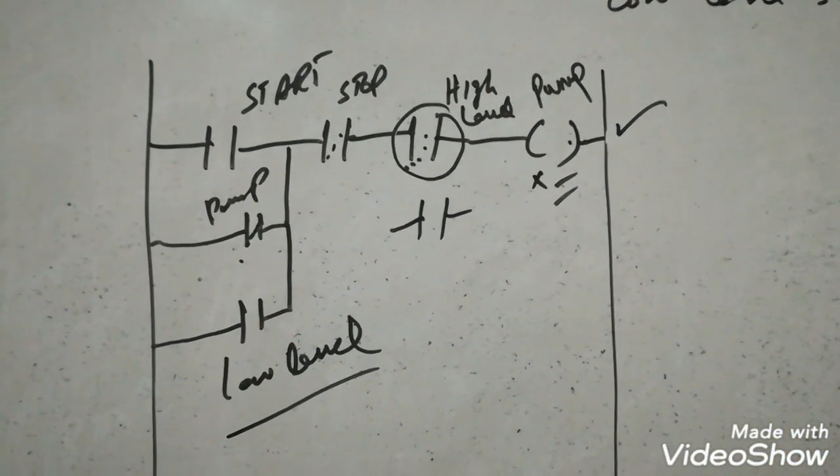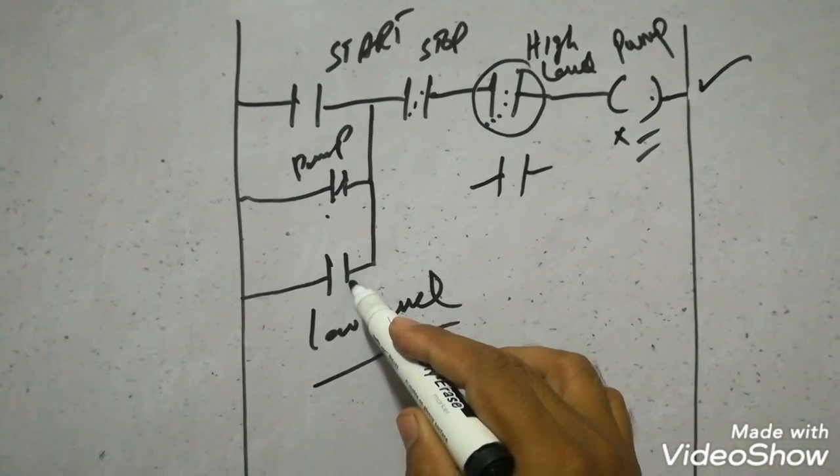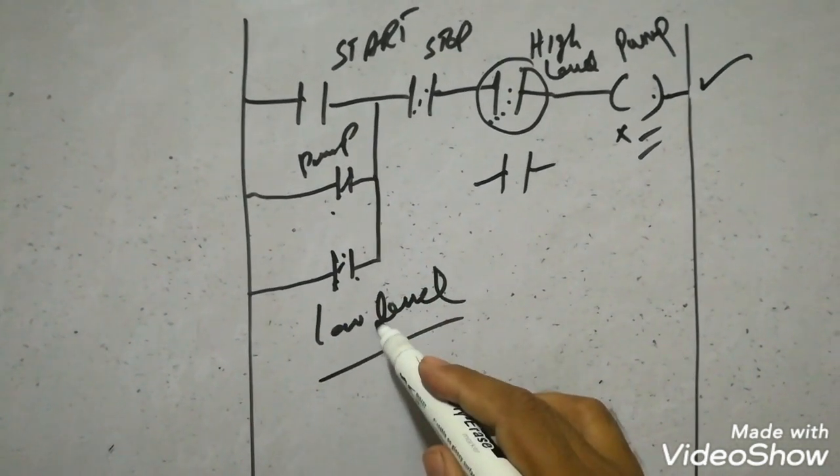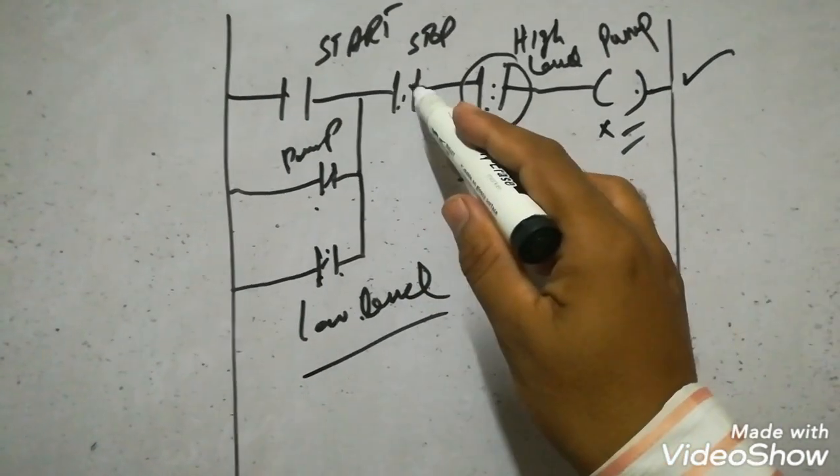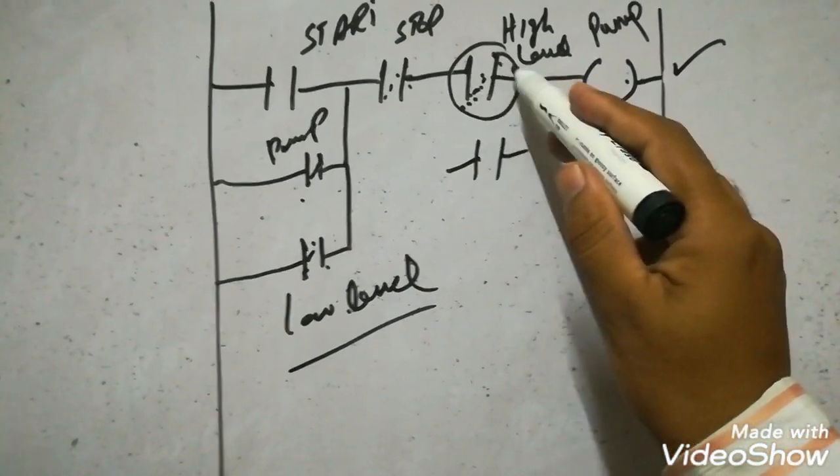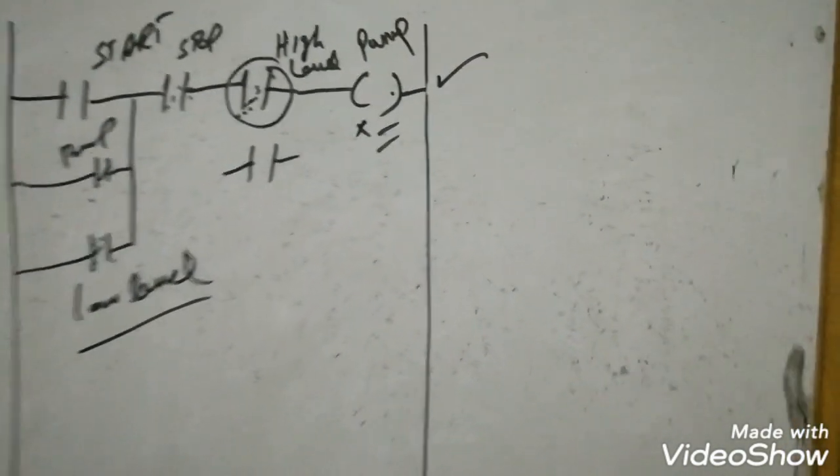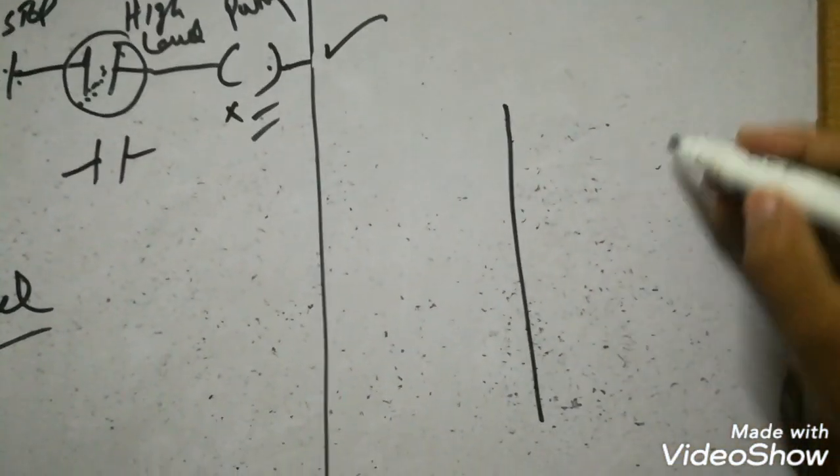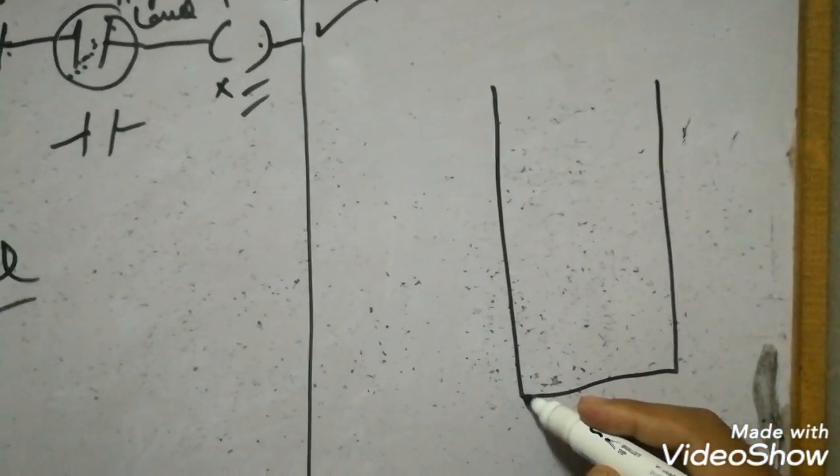So now level is reducing because we are using level. When level reduces up to the low level limit, then this contact will close and again our pump will start. So in this way our pump will keep starting and stopping and will maintain the level.